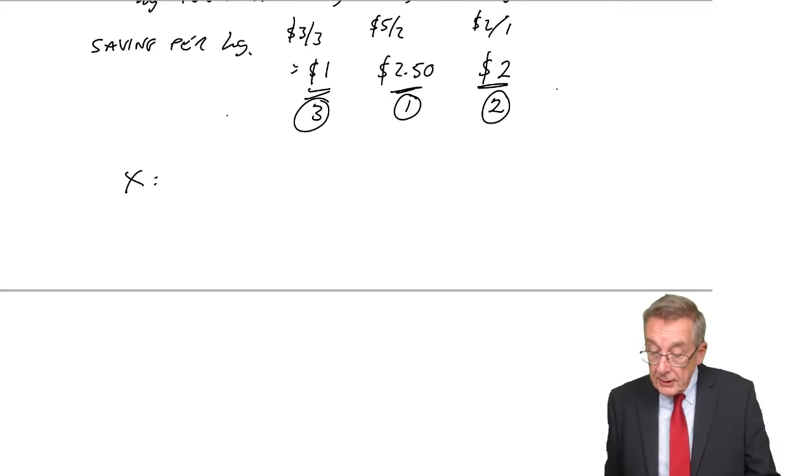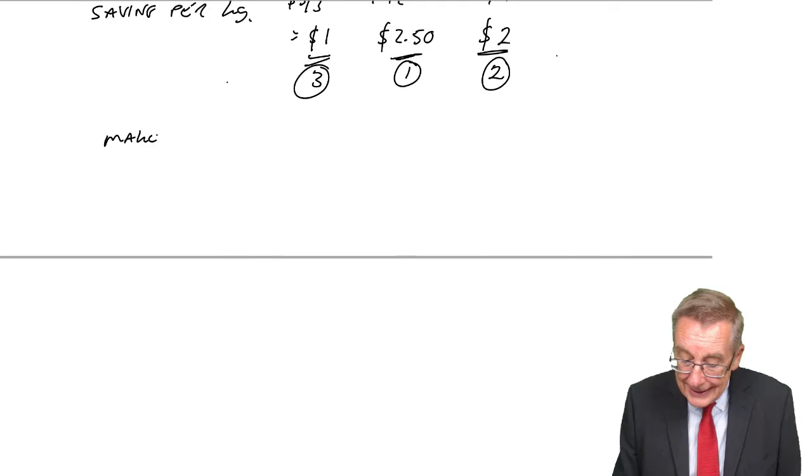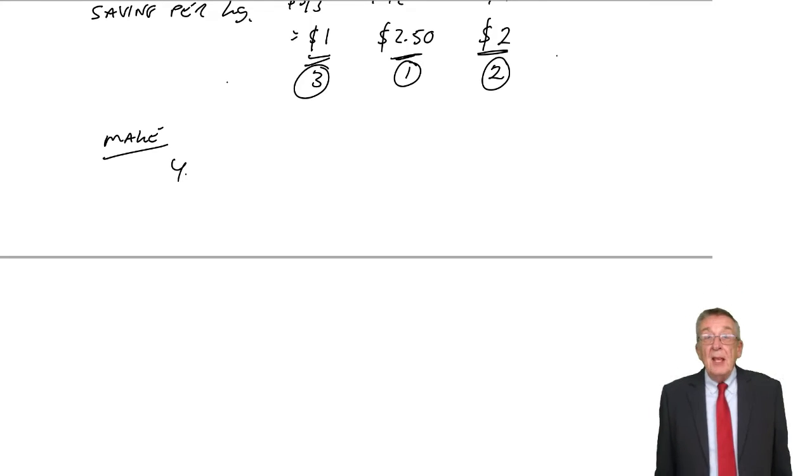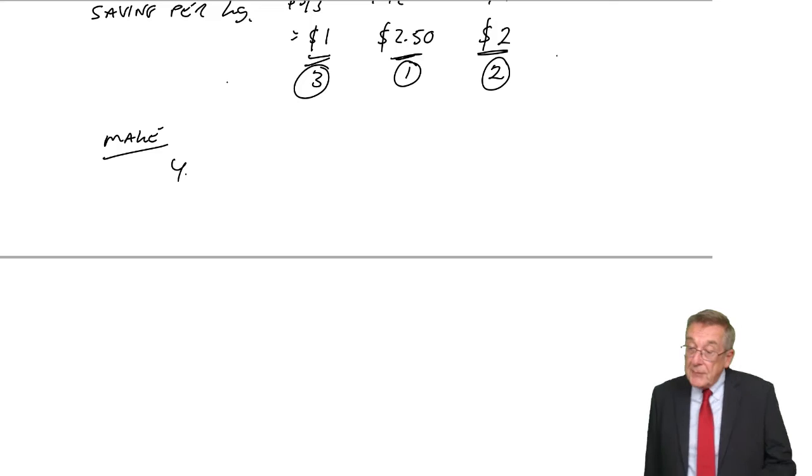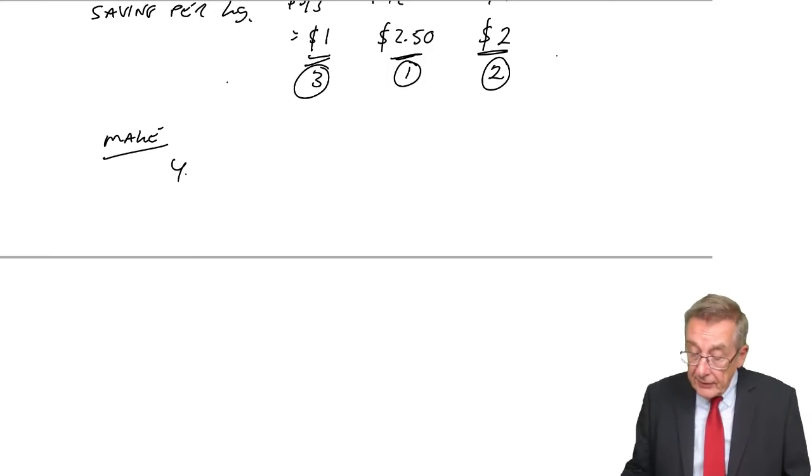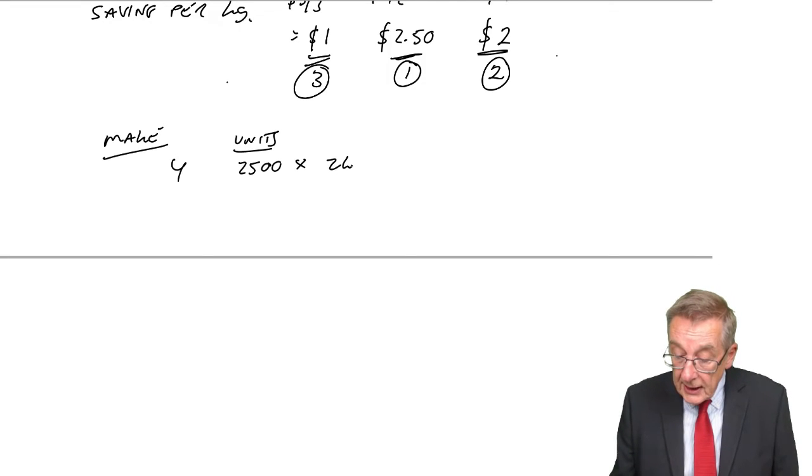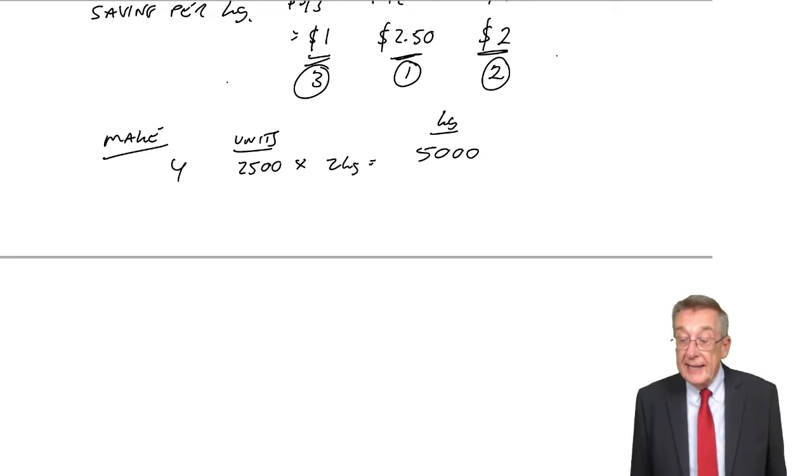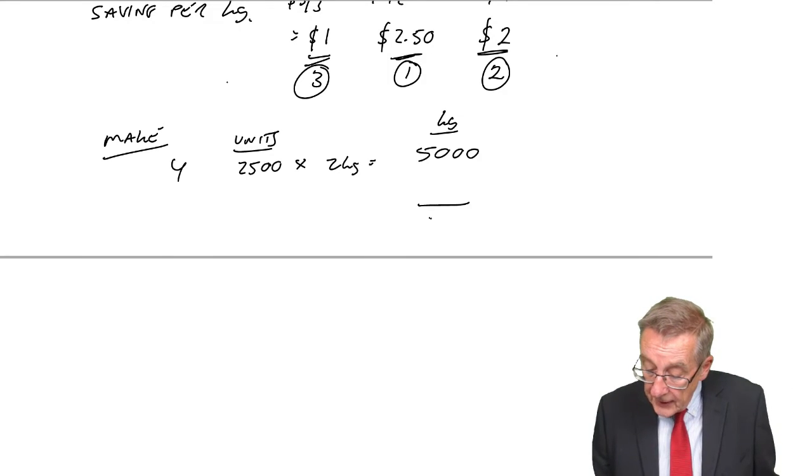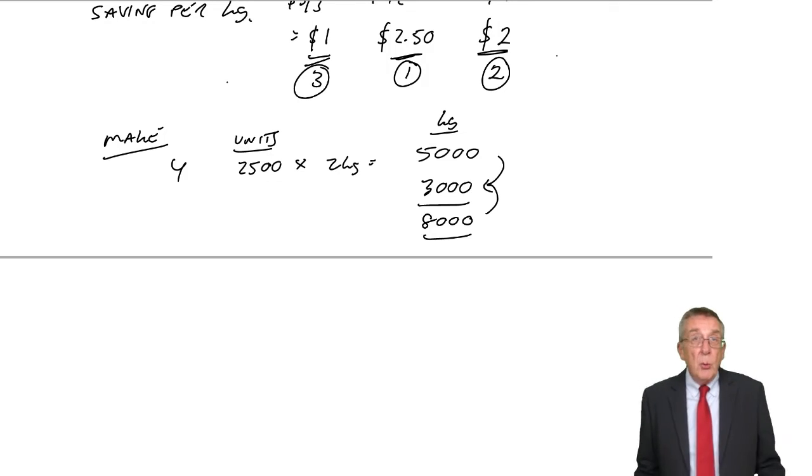But remember two things. We'll never make more than we can sell, so the most we'd make is 2,500, maximum demand. At the same time, remember, we can't use more than 8,000 kilos. However, I think I have enough kilos here. I will make two and a half thousand ourselves. Each unit takes two kilos. And so, that would use up 5,000 kilos. So, no problem. We've got enough to make all of Y. How many kilos have we got left? Well, remember, there were 8,000 kilos available, with 3,000 left. We can't make any more Ys because we won't sell them.